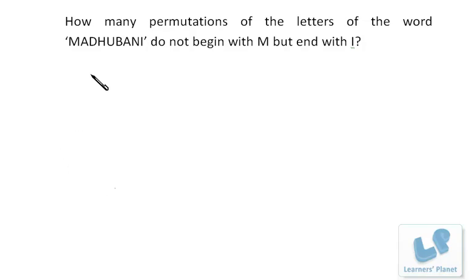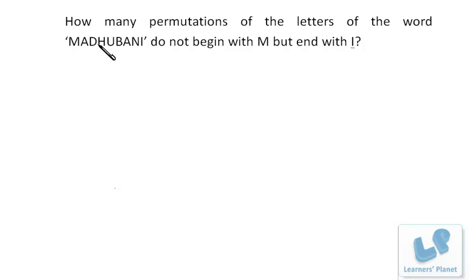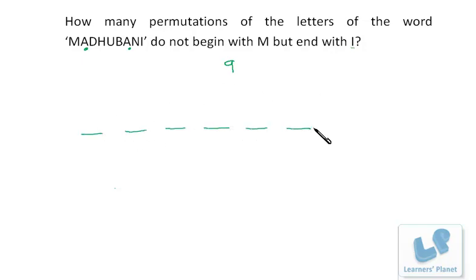Let's try this problem: how many permutations or arrangements of the letters of the word MADHUBANI do not begin with M but end with I? There are 1, 2, 3, 4, 5, 6, 7, 8, 9 — nine letters total, and the letter A is repeated two times. Let's take positions 1 through 9. The last position is fixed for I, so we have just one choice there.